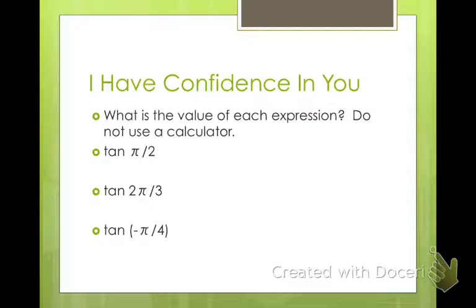I want you to go ahead and do these three. You're going to check them with your partner. I'm not going to go over them with you, but I want you to find the tangent of π over 2, 2π over 3, and negative π over 4. These are all on the unit circle, so you don't have to do any additional extra crazy work to do it.